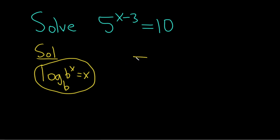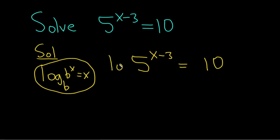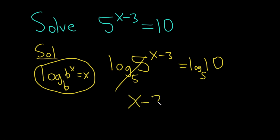So here the base is 5. We'll start by rewriting our equation: 5 to the x minus 3 equals 10. Notice I left some room here — that's because I'm going to take the log base 5 of both sides. The reason I'm using 5 is because the base is 5. Now we can use the formula because they match, so it basically cancels, and we're left with x minus 3 equals log base 5 of 10.